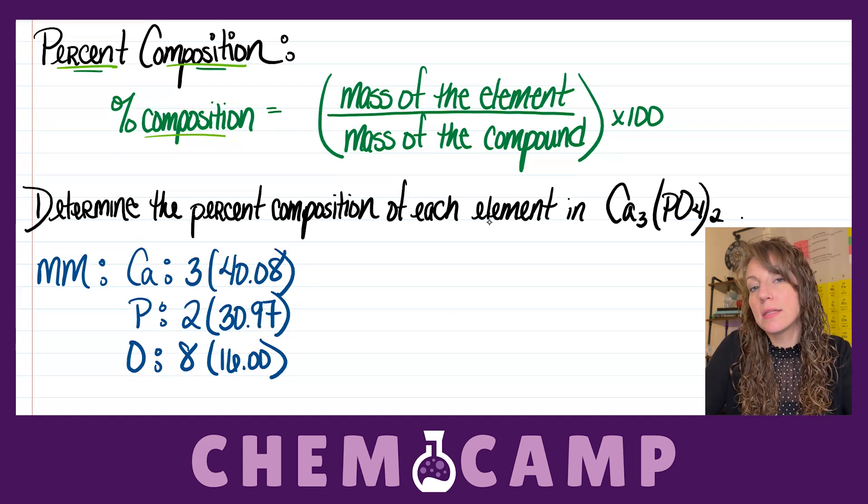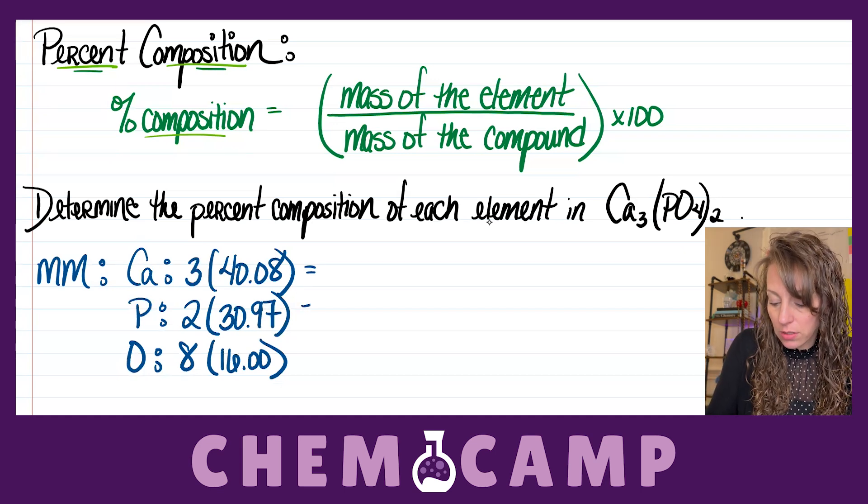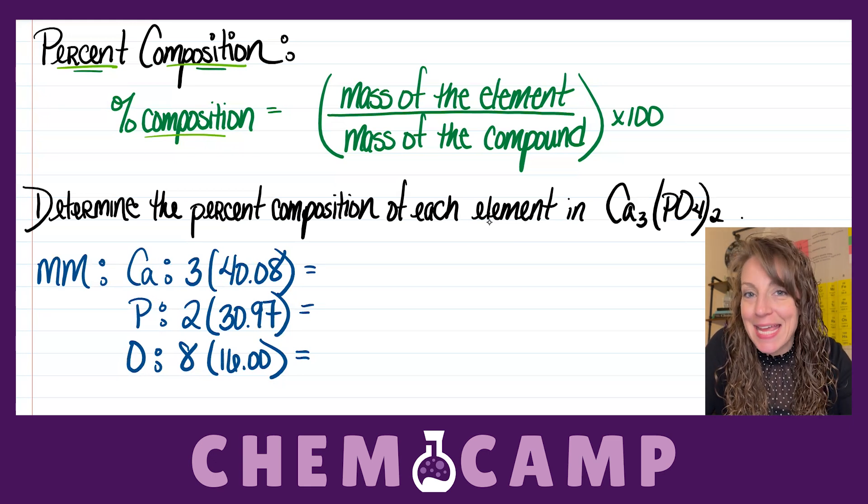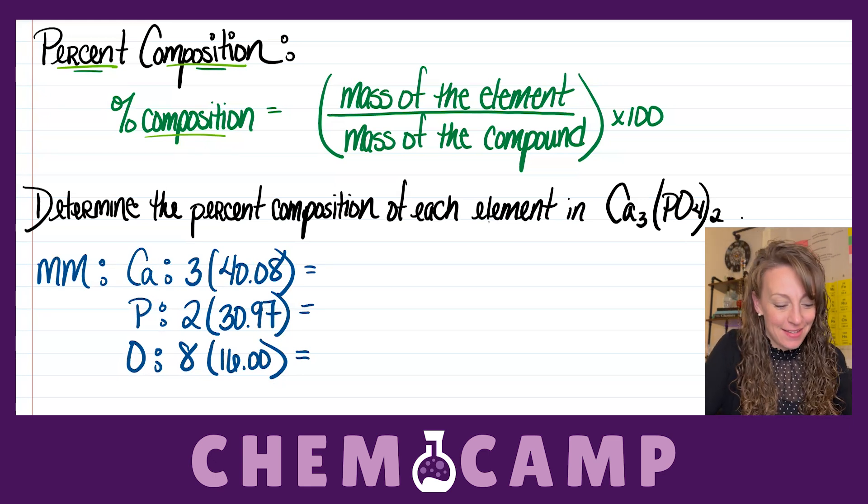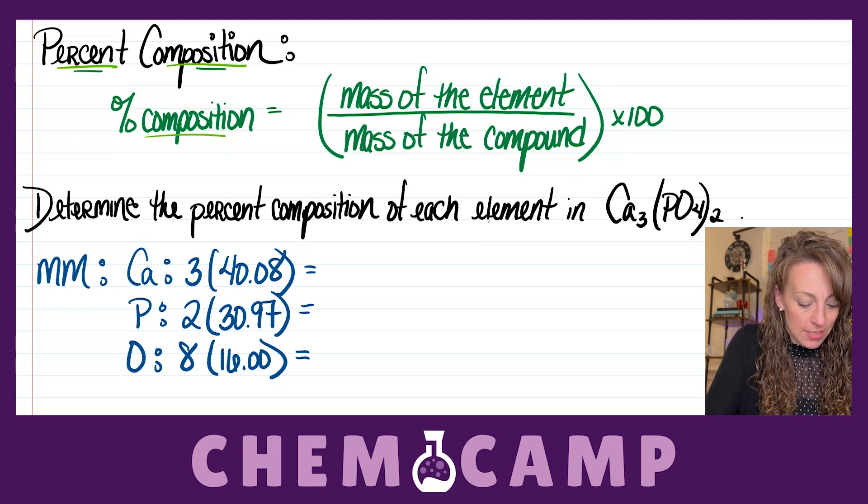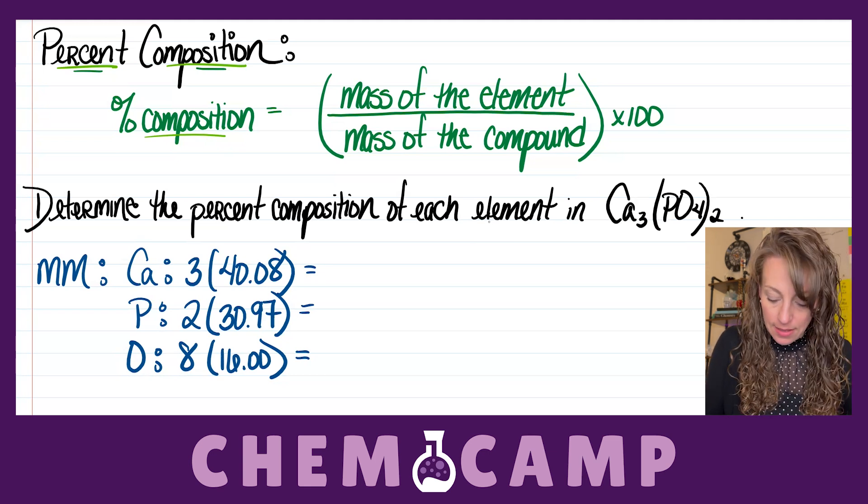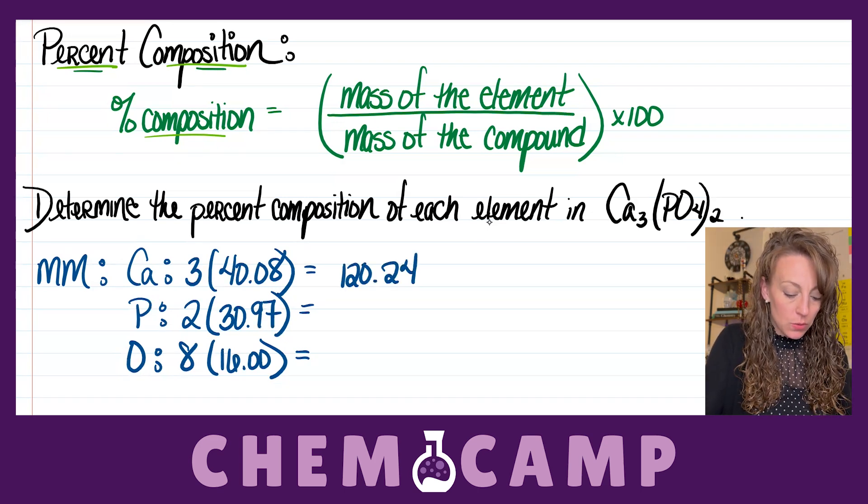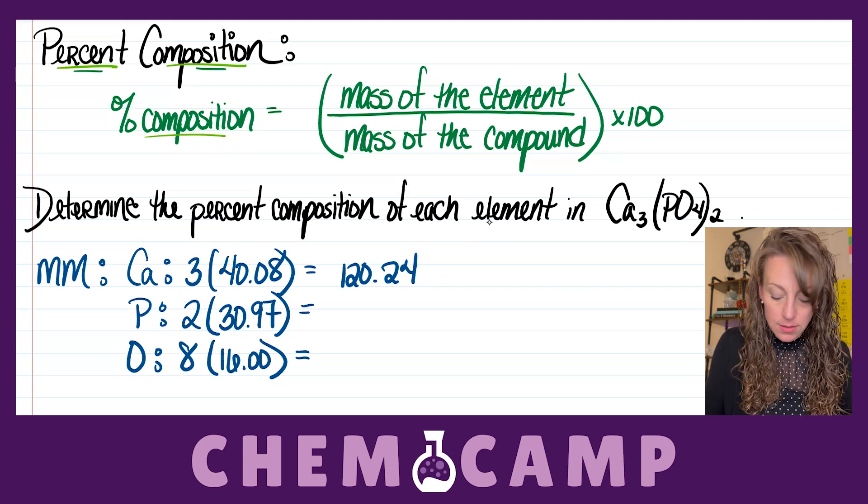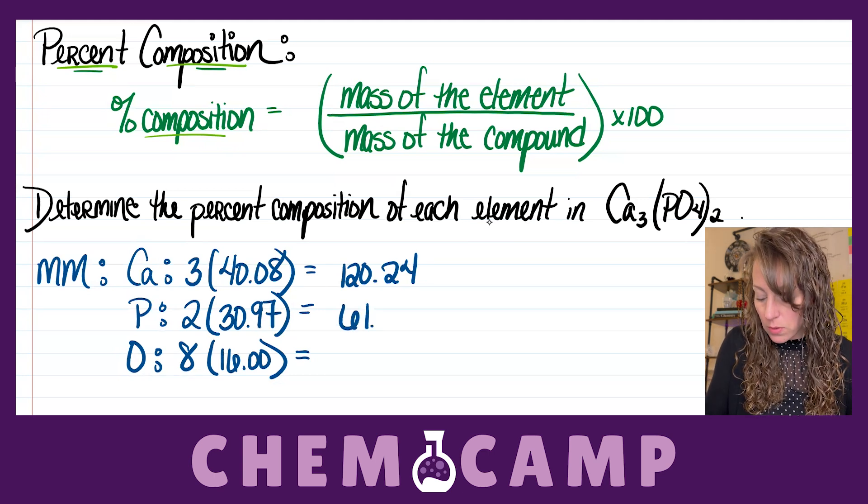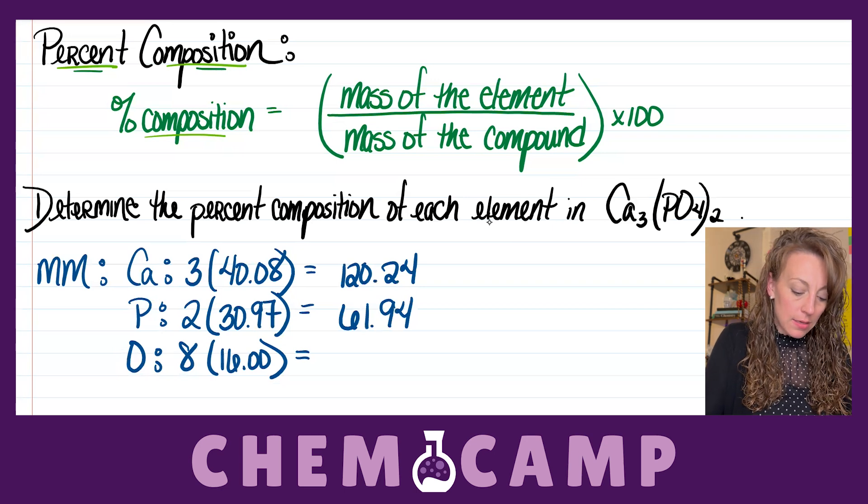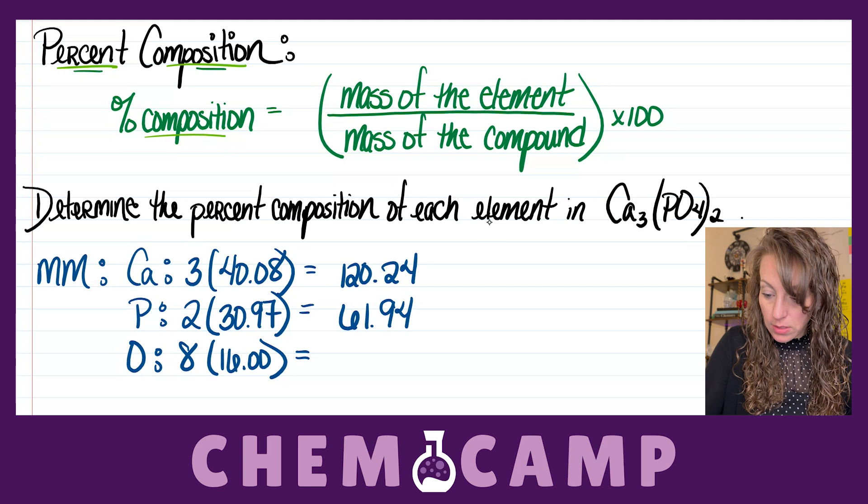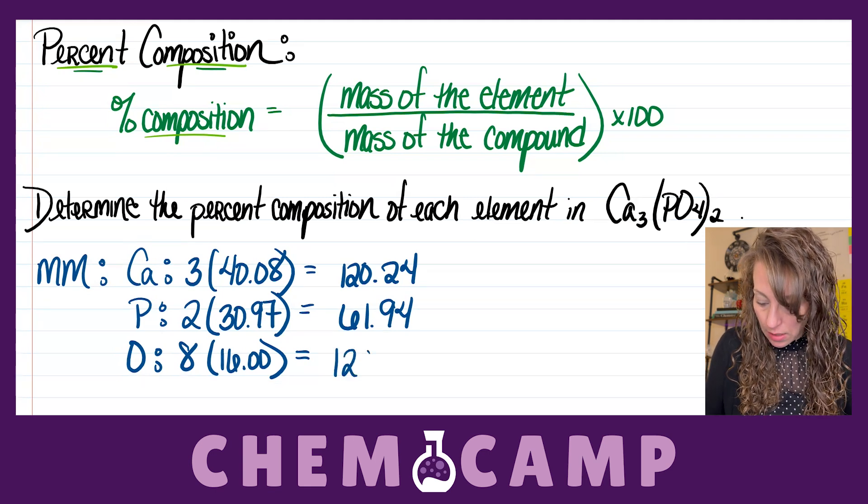Now, I'm going to take a second to get the answer to each one of those multiplication steps, because it's going to come in handy in a minute. So, 3 times 40.08 gives me 120.24. 2 times 30.97 gives me 61.94. And 16 times 8 gives me 128.00.